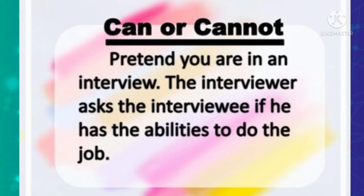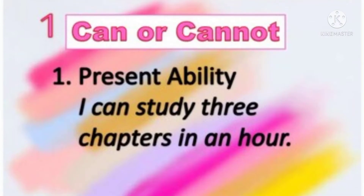The first type of modal auxiliaries is 'can' or 'cannot.' Imagine you are in an interview — the interviewer asks the interviewee about his abilities to do the job. The interviewee responds using 'can' to express his abilities. For example, 'I can study three chapters in an hour' — that expresses his ability. So 'can' is used to show one's ability: I can sing, I can dance, I can study, I can perform well.